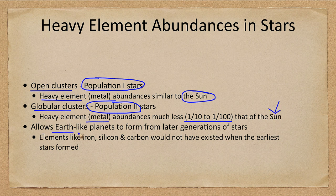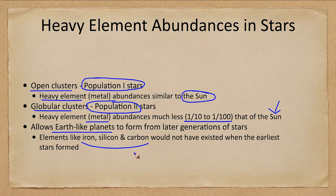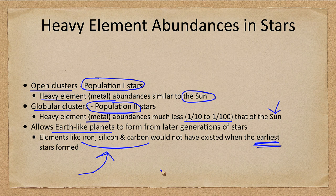This allows earth-like planets to form from the later generations of stars. The very earliest generations of stars would not have had things like iron, silicon or carbon that make up our earth. They would not have been present when the earliest generations of stars formed.